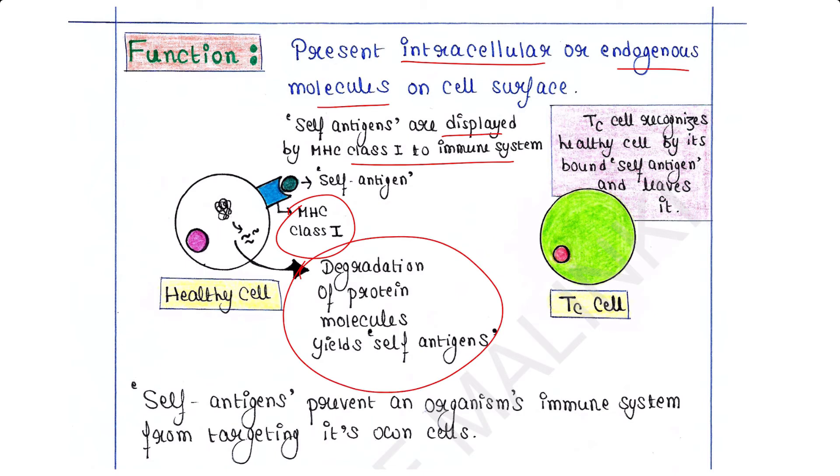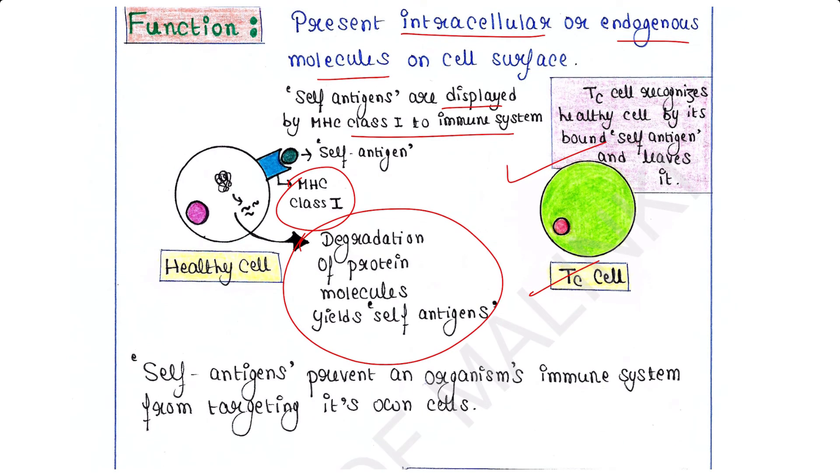Immune cells in our body are like soldiers and they continuously monitor all the cells in order to maintain the body's defense. When an immune cell, specifically a Tc cell, approaches, it can recognize the healthy cell by its bound self antigen and this Tc cell leaves it. In this way, these self antigens prevent an organism's immune system from targeting its own cells.